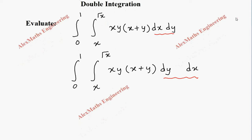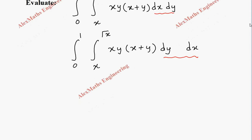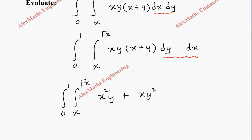Now I am going to integrate with respect to y. Before that, let's expand: integral 0 to 1, integral x² to √x — when I multiply, this will become x²y + xy², dy, then dx.